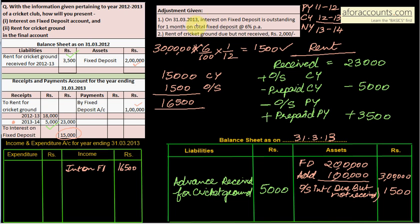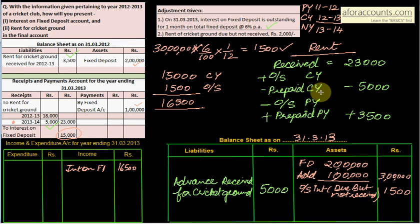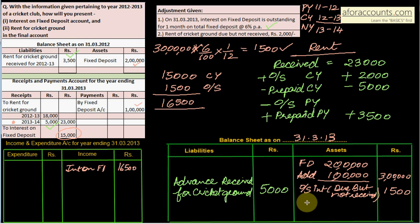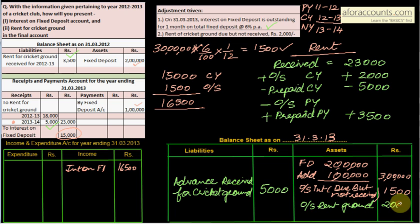Adjustment: rent of cricket ground due but not received is 2,000. This is income earned but not yet received — it is outstanding. Using the formula, add 2,000. Since it is income due but not received, it is an asset in the current year balance sheet: 'Outstanding rent of cricket ground' — 2,000.